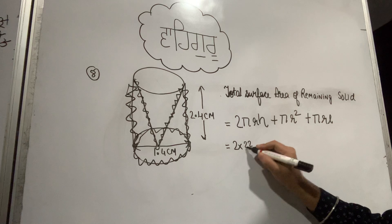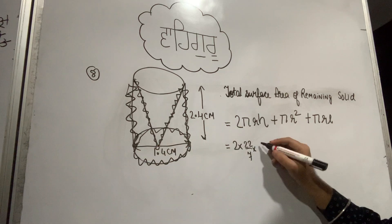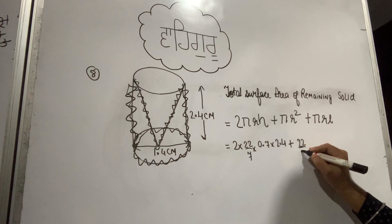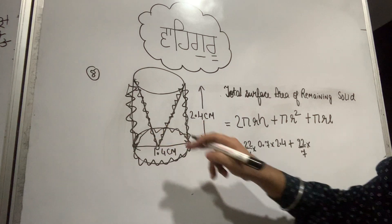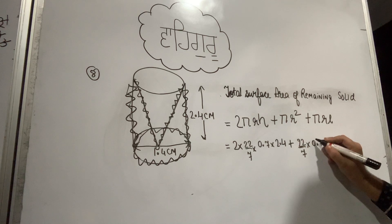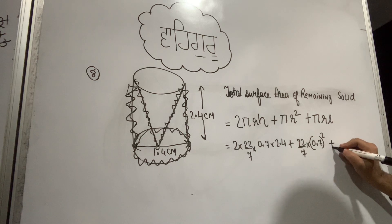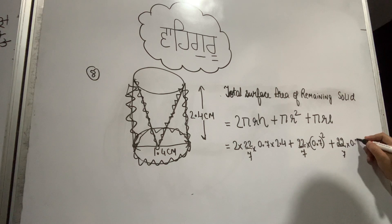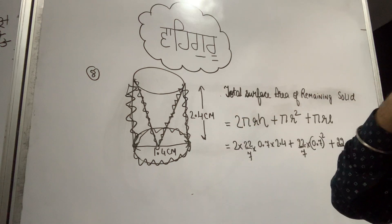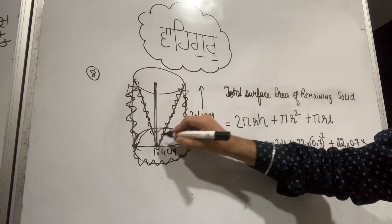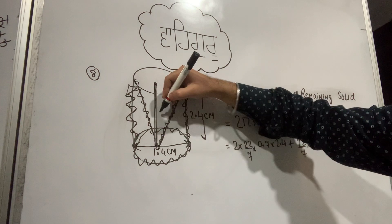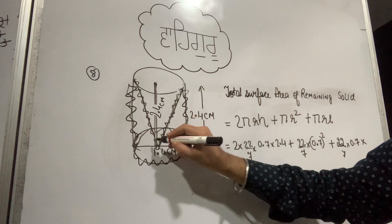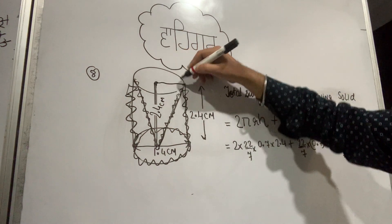Here we use the value 22 by 7. Radius equals diameter 1.4 divided by 2, so radius is 0.7 cm. Height is 2.4 cm. We also need pi r squared for the base and pi r l for the cone's lateral surface. The slant height l needs to be calculated.